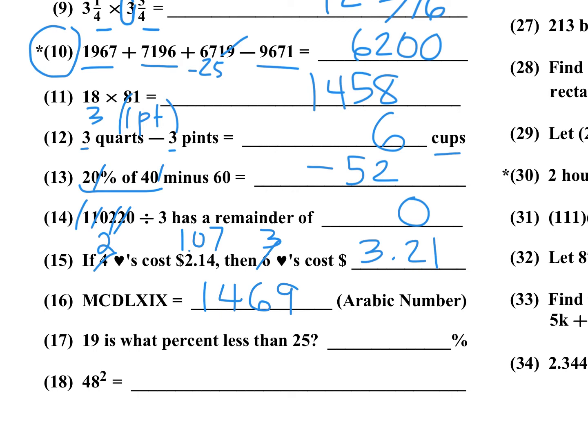Number 17: 19 is what percent less than 25? The difference is 6, so 6 out of 25 is what percent. If I multiply this by 4 in the denominator, multiply by 4 in the numerator, I get 24 over 100 which is 24 percent. So the answer there was 24 percent.